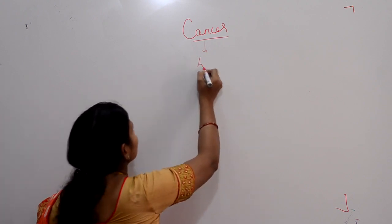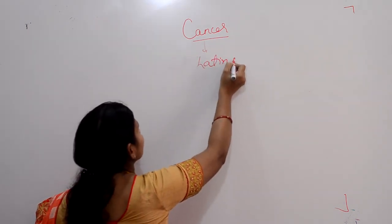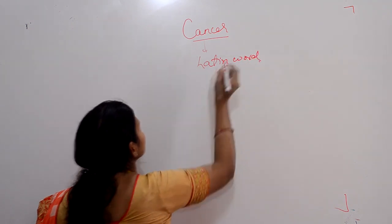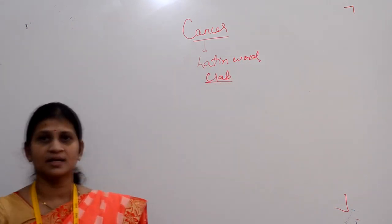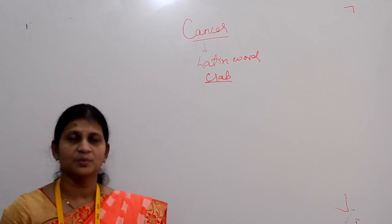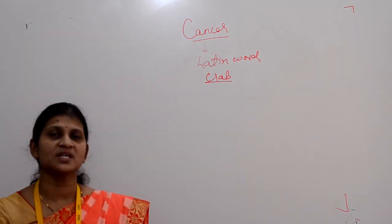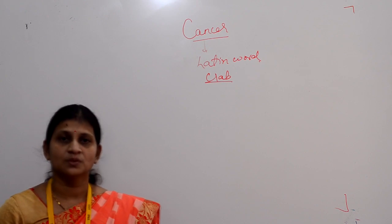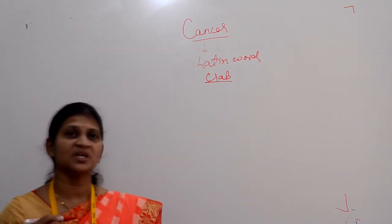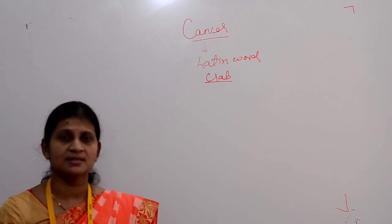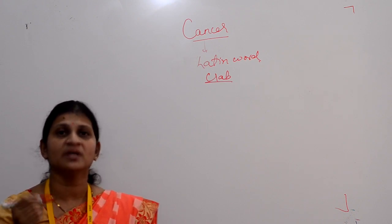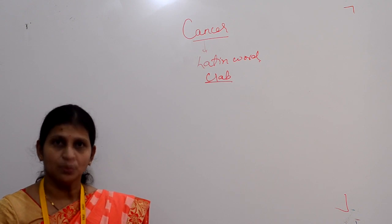Cancer is a Latin word meaning crab. A Greek scientist, Hippocrates, described cancer as a disease which spreads like a crab. Simply, cancer can be defined as a disease in which abnormal cells grow in an uncontrolled manner inside the body.